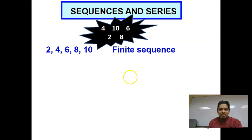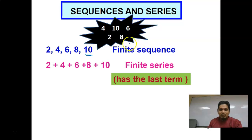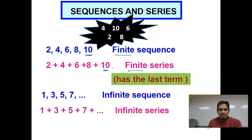Finite means the sequence ends with one final number. When we add all the numbers, we call it a Finite Series. The reason we call it Finite is because it has a last final term — which is 10 here. Now, 1, 3, 5, 7 in a Finite Sequence and also in a Finite Series.